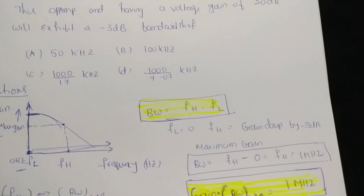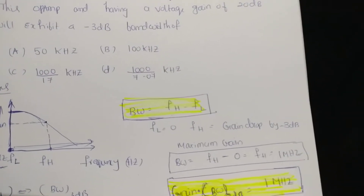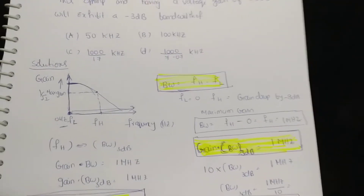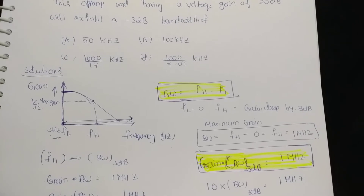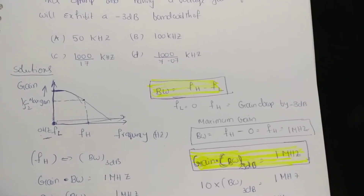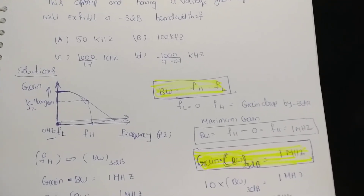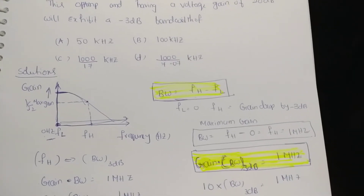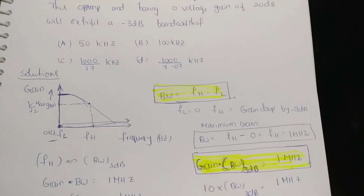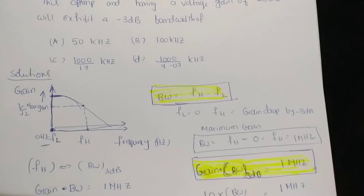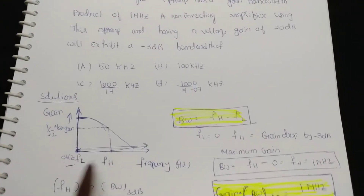In other words, bandwidth is the range of frequencies over which the gain is greater than or equal to 70.7% of its maximum gain. In decibels, the gain must be greater than or equal to the maximum gain minus 3 dB. That is the reason we consider the -3 dB points.